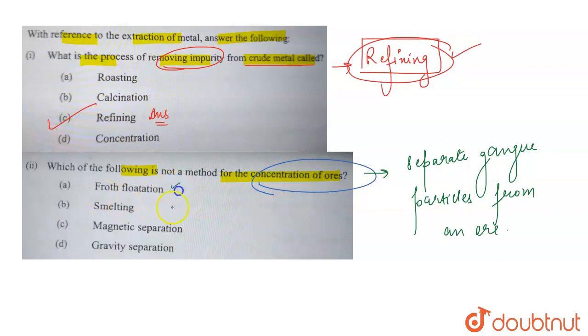Froth flotation is used for the concentration of ores. Magnetic separation is used for the concentration of ores, and gravity separation is also used for the concentration of ores.